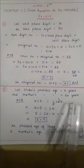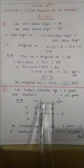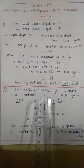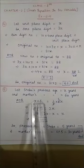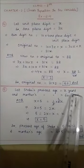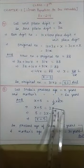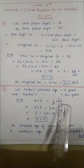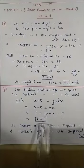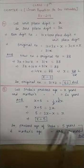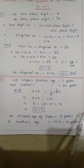Shobo's age 5 years from now is x + 5. This will be equal to one third of his mother's present age. Mother's present age is 6x, and one third of 6x means multiply by 1/3, so it becomes 2x. Therefore x + 5 = 2x, which gives x = 5. So Shobo's present age is 5 years and mother's present age is 6 × 5 = 30 years.